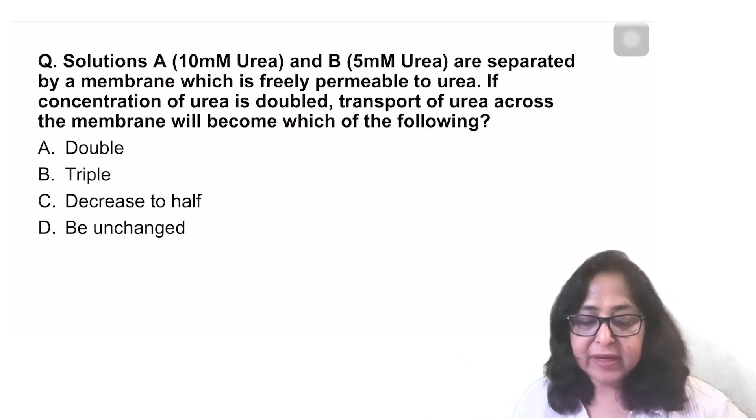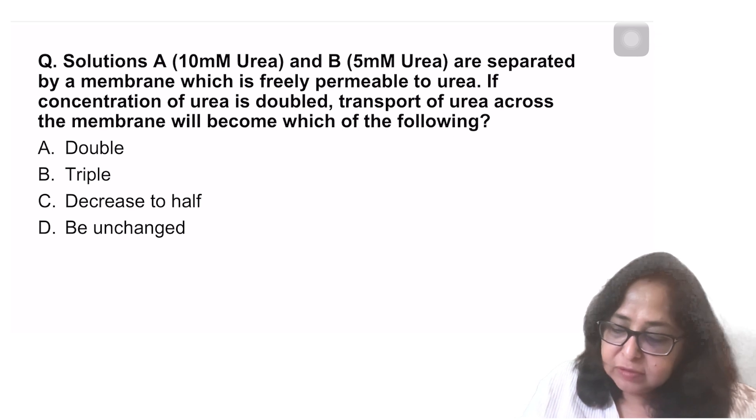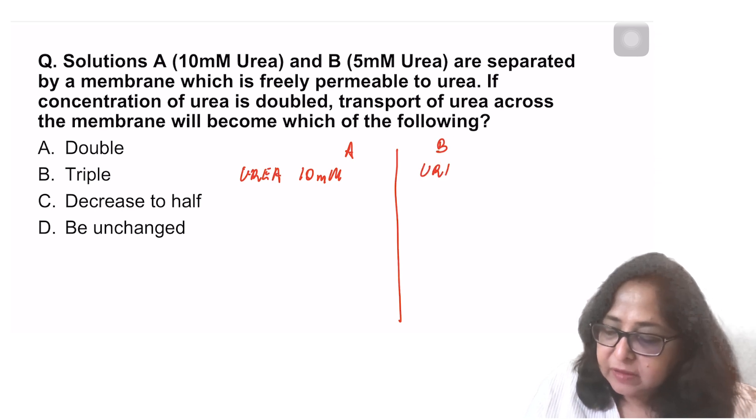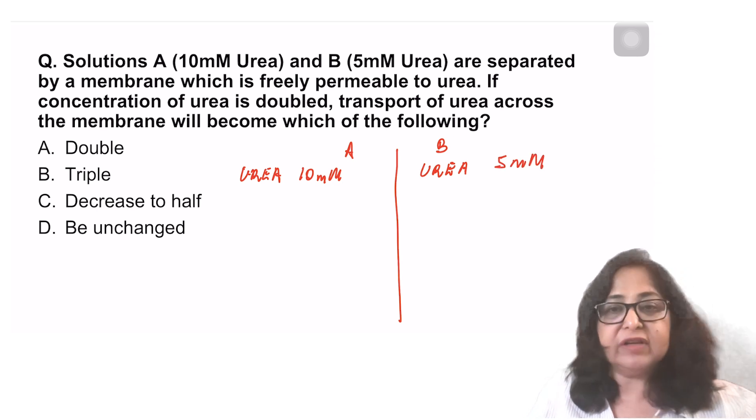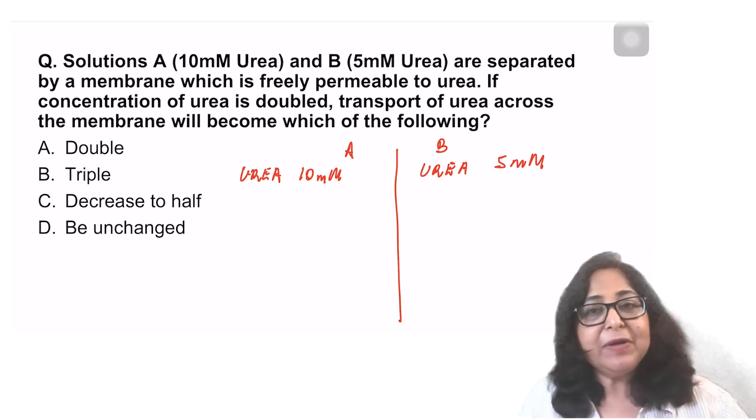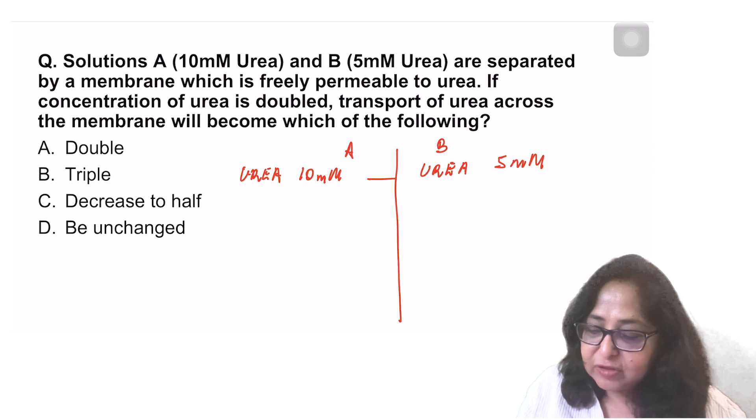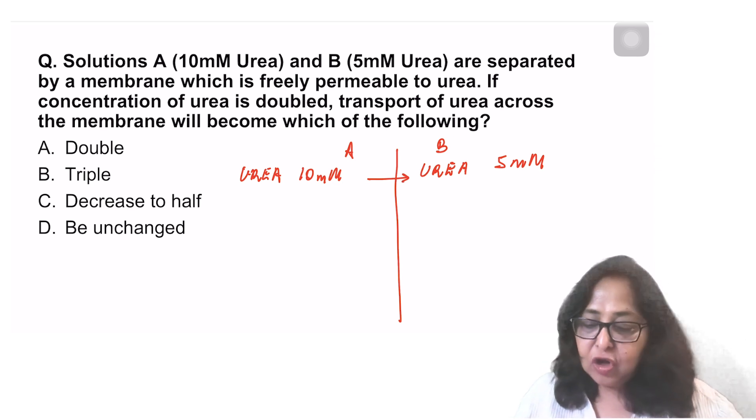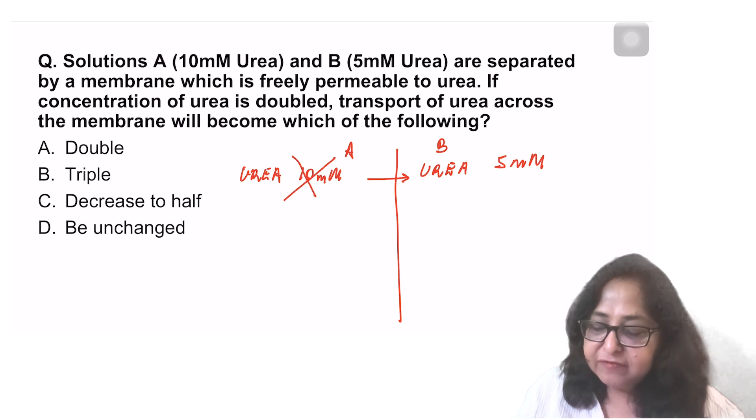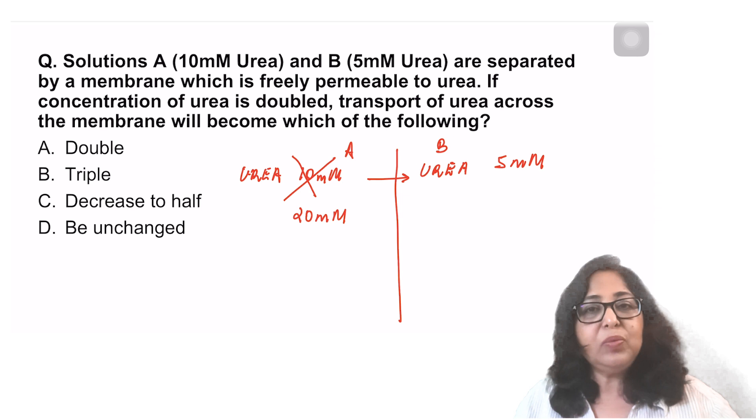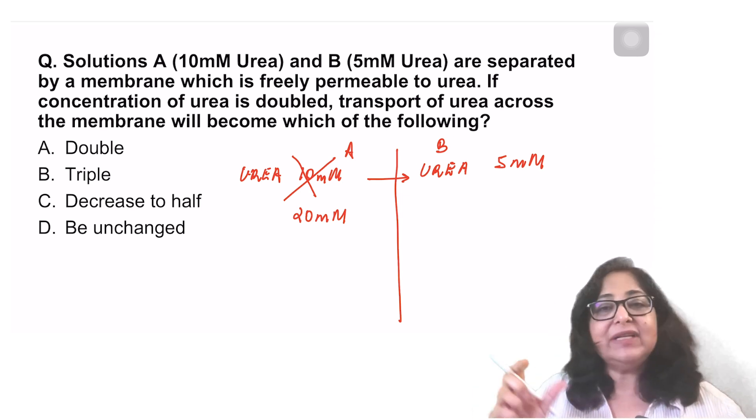Let's look at the next question. This says solution A, which has got 10 millimoles of urea. It's a 10 millimole urea solution. And solution B, which is a 5 millimole urea solution. It says the membrane is freely permeable to urea. If it is freely permeable to urea, then it will move from solution A to solution B, from higher to lower concentration. So urea starts moving from solution A to solution B. Question says, if the concentration of urea is doubled, if it becomes 20 millimoles, what will happen to the rate of transport? Please understand what is important.